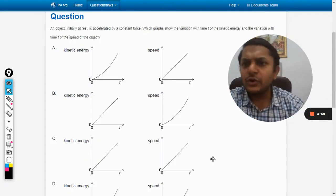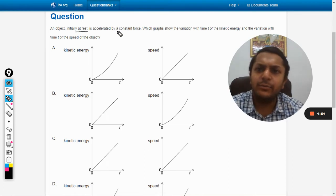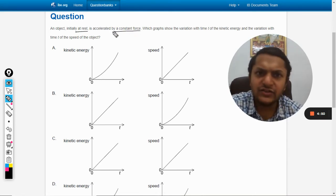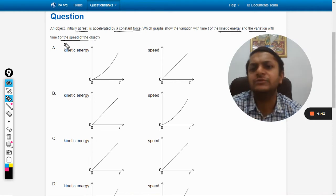Okay, so in this question an object initially at rest is accelerated by a constant force. Which graph shows the variation with time t of the kinetic energy and the variation with time t of the speed of the object?